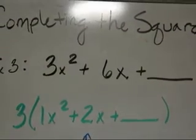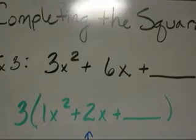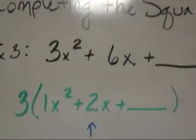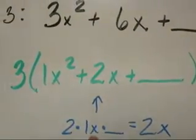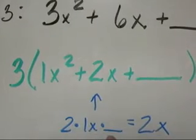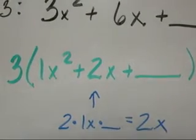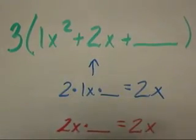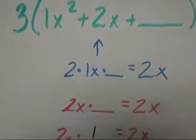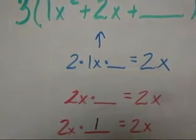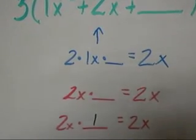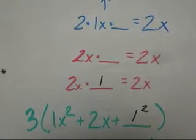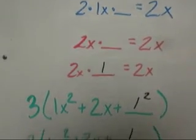Now I want to make the stuff inside the parentheses be a perfect square trinomial. Remember that middle term, which is now 2x, is still root, root, double. So 2 times the square root of 1x², which is 1x, times the unknown square root has to produce 2x. 2 times 1x is 2x. So 2x times what is 2x? The missing number is 1. But remember that 1 is the square root of the last term. So when I plug it back in, I need to plug it in as 1², which is just 1.